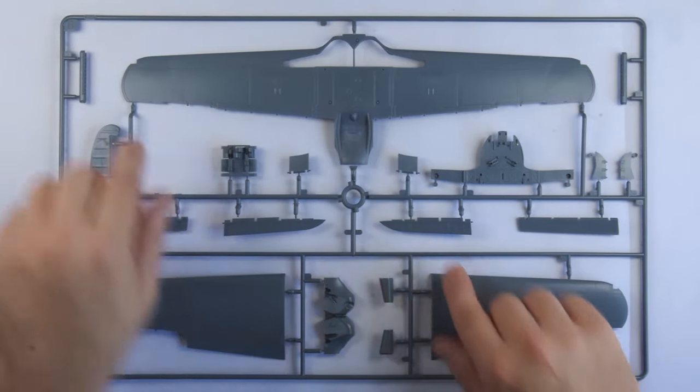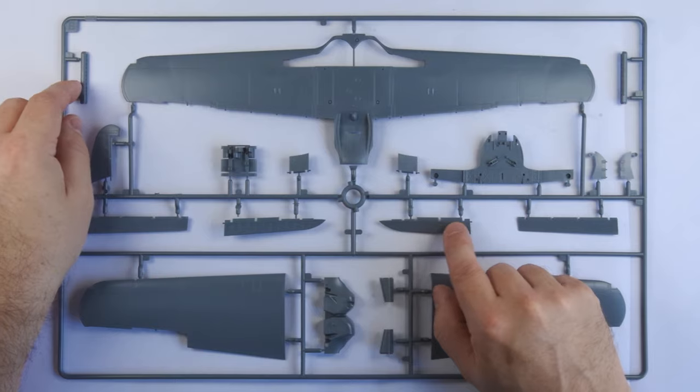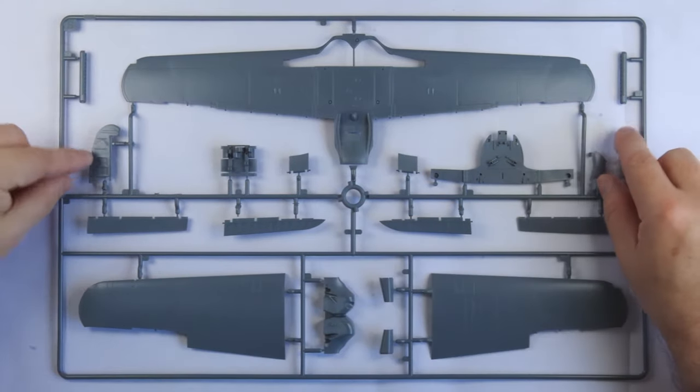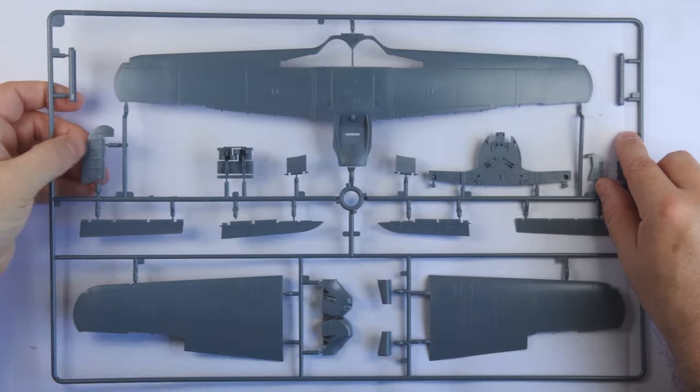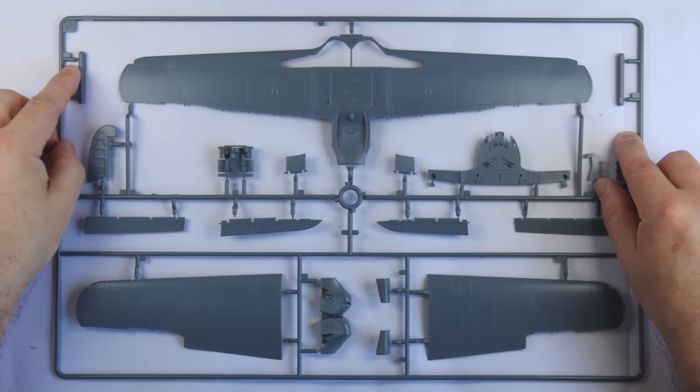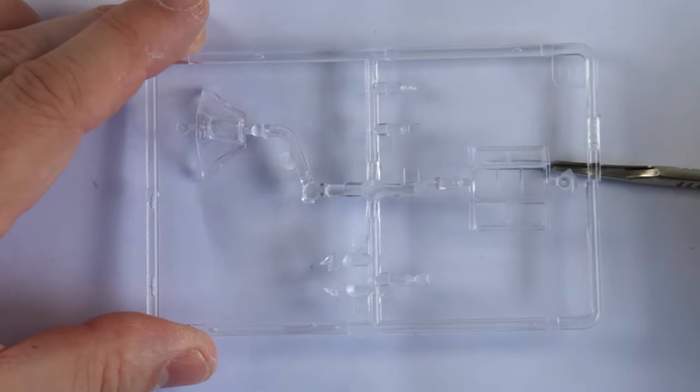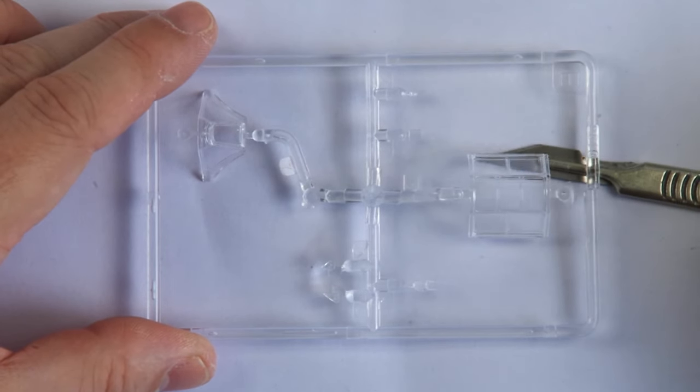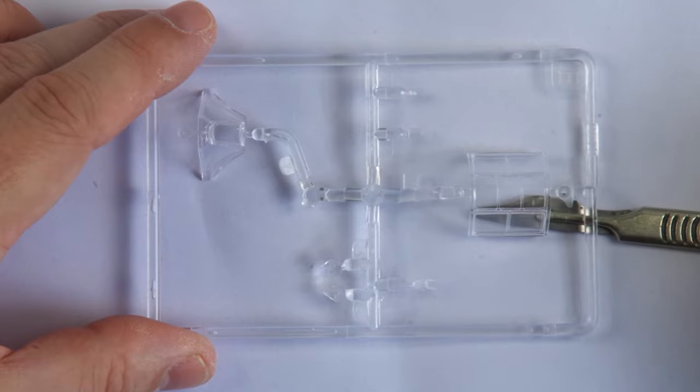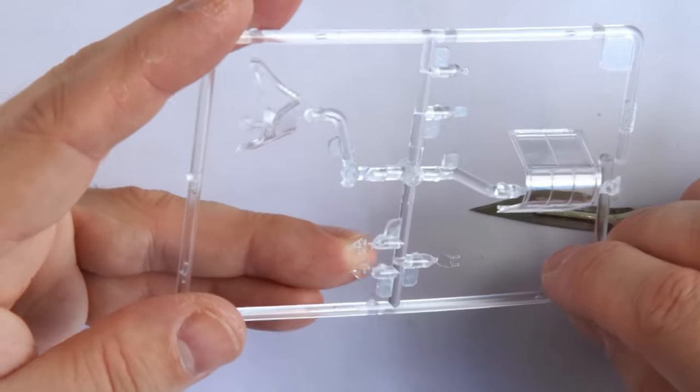The first of these is the absence of any bays for the optional outboard machine guns on the later models. This wouldn't have upped the part count or complexity of the kit much, and would have enhanced those versions. There are no masks for the canopy, which I would really have thought should have been included at this sort of price point, and for as complex a job as the Macchi's cockpit calls for.